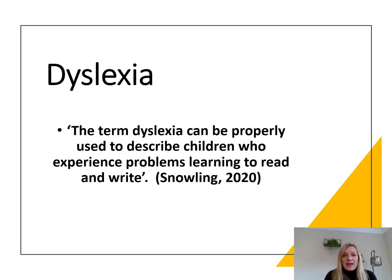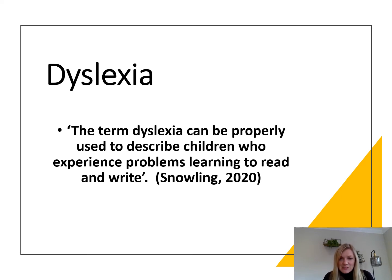Margaret Snowling in 2020 said the term dyslexia can be properly used to describe children who experience problems learning to read and write. She also said that as children grow into teenagers and adults, whilst they might have developed accuracy in their reading and writing, fluency might still be something that they have difficulty with.